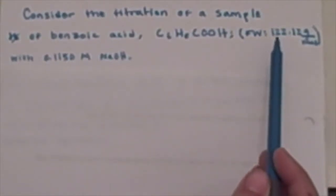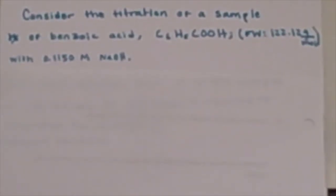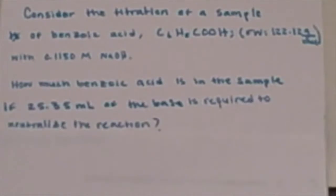Here's an example of a titration problem. Let's consider a titration sample of benzoic acid with a formula weight of 122.12 and reacting with 0.1150 molarity of NaOH. The first question asks, how much benzoic acid is in the sample if 25.35 milliliters of the base is required to neutralize the reaction?